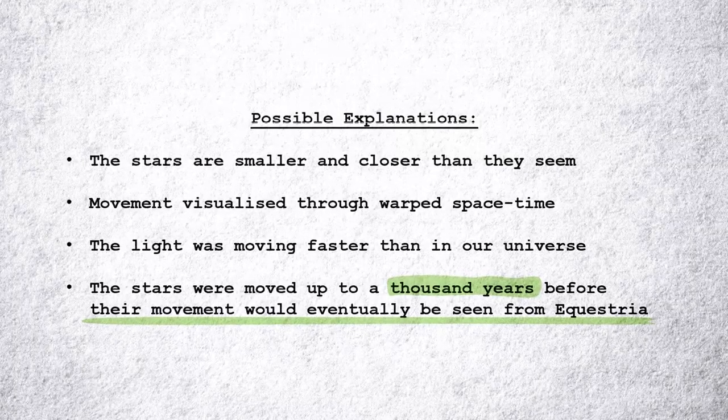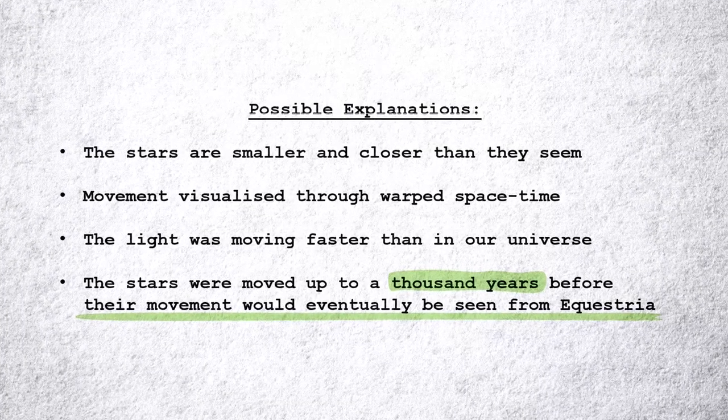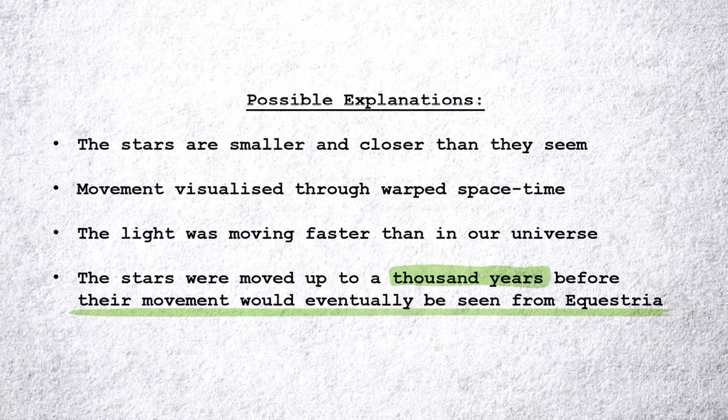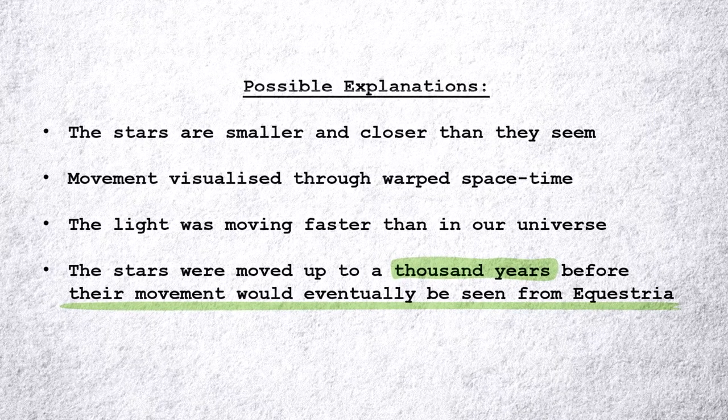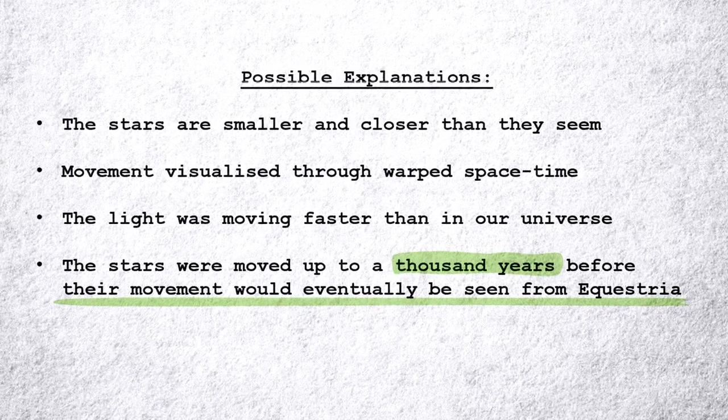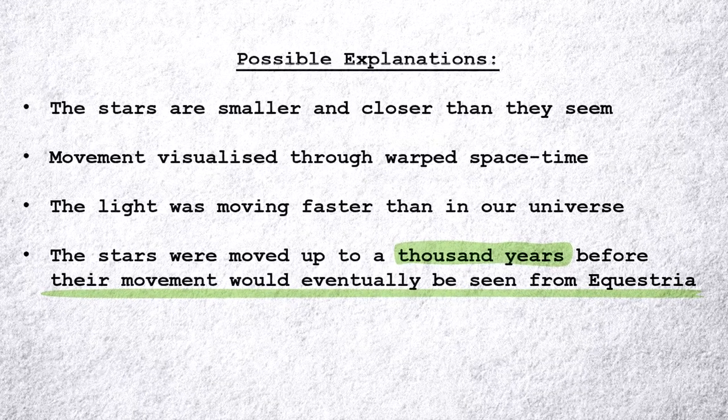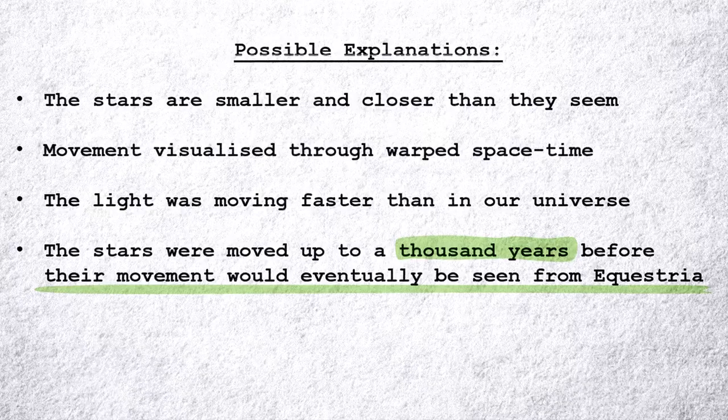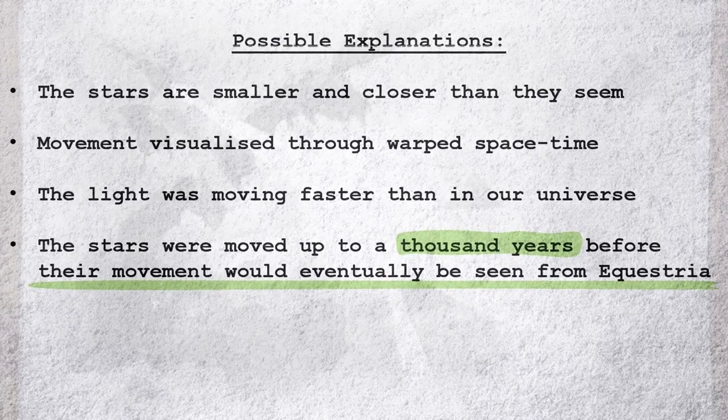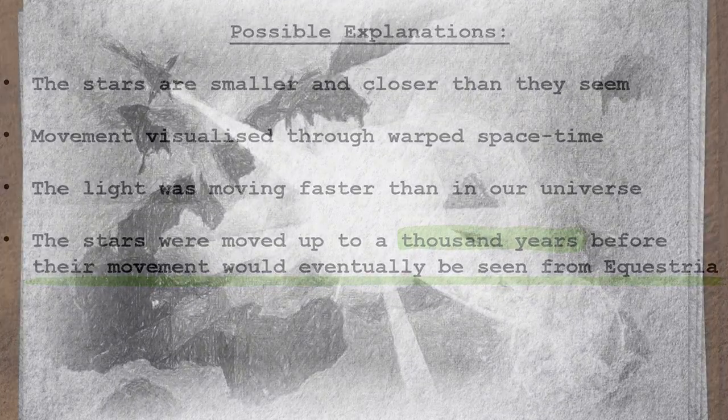You see, presuming the speed of light is consistent between both ours and the MLP universes leaves us with only a few options for explaining this phenomenon. It could be the stars were actually smaller and closer than they seemed, it could be someone magically sped up the light or warped space-time, or it could be those stars were actually moved up to a thousand years before their movement would eventually be seen from Equestria.